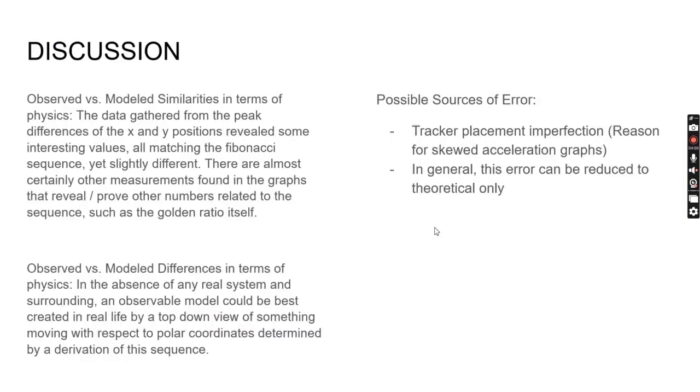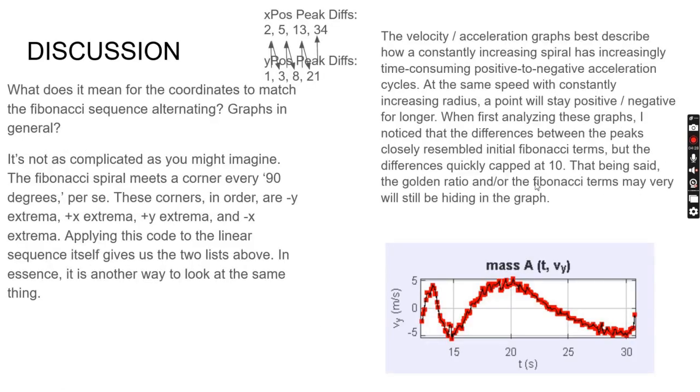What does this all mean? The differences revealed interesting values matching the Fibonacci sequence. There are certainly other measurements that can prove numbers related to the sequence like the golden ratio. Obviously not a real system—possible source of error is imperfection of tracker placement.